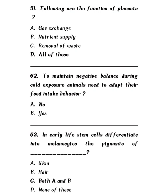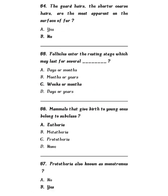Question 53: In early life, stem cells differentiate into melanocytes, the pigments of — skin, hair, both A and B, or none of these? The correct answer is both skin and hair. In early life, stem cells differentiate into melanocytes, the pigments of skin and hair. Question 54: The guard hairs — the shorter coarse hairs — are the most apparent on the surface of fur — yes or no? The answer is no, because the skin pigments are the most apparent on the surface of fur, not the guard hairs.